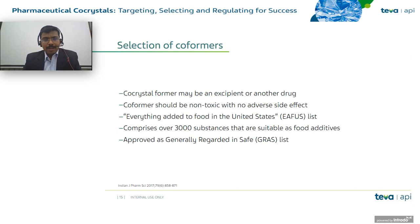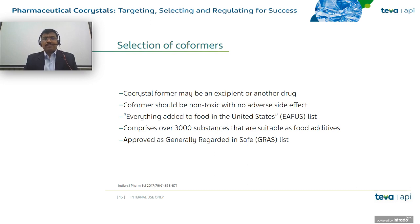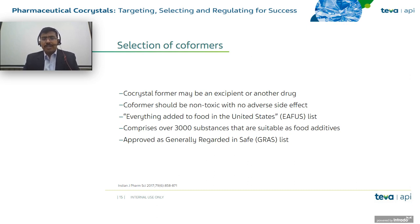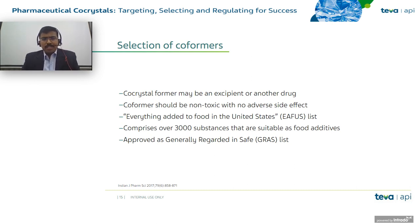The main challenge in pharmaceutical development is selection of co-formers. A predetermined library of pharmaceutically acceptable and approved co-formers is already available — the co-former is an excipient or drug product, should be non-toxic and with no side effects. The EAFUS list — Everything Added to Food in the United States — consists of 3,000 substances suitable as food additives. We also have GRAS-listed co-formers to start from. Selection of co-formers is done by knowledge-based methods and trial-and-error methods.